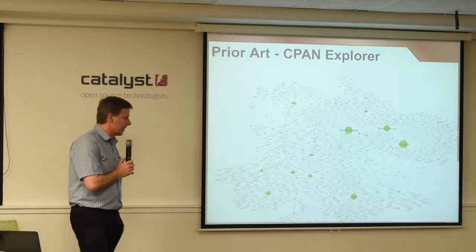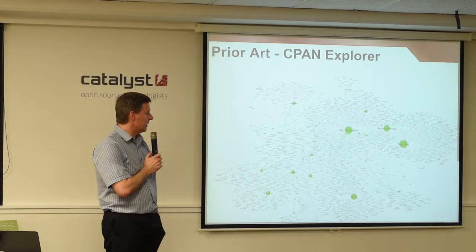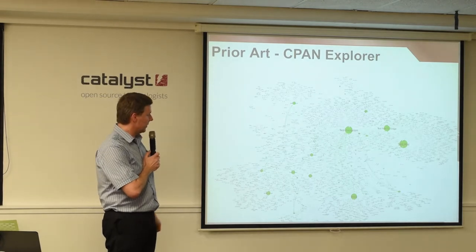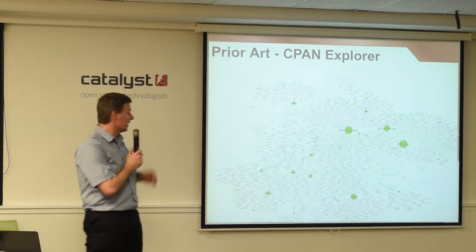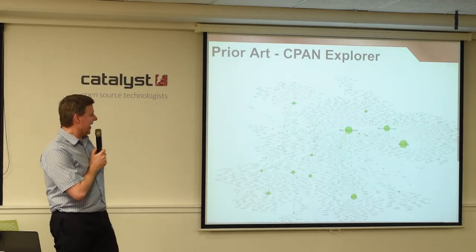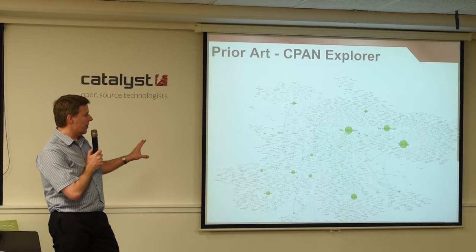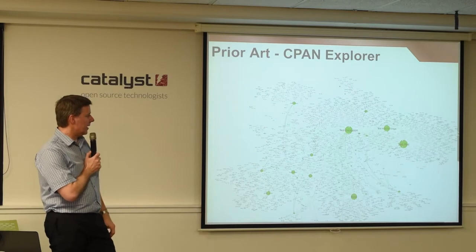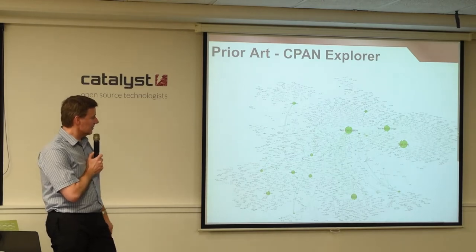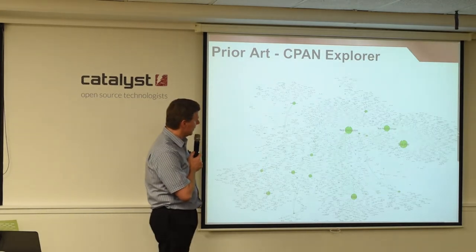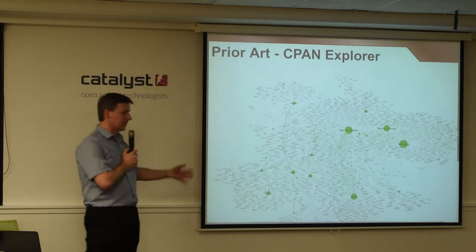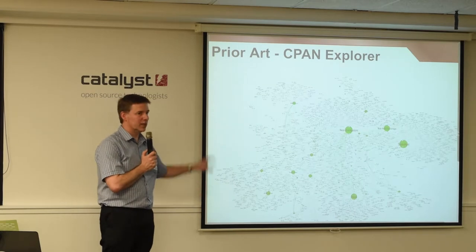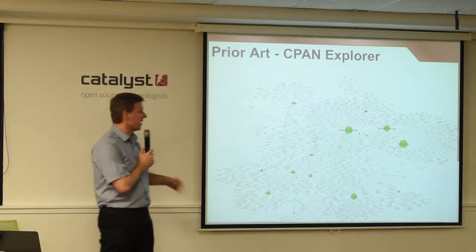I wasn't the first person to think of mapping CPAN, and not even the first person to actually do it. Someone created this thing showing the relationships — the dependencies between different modules. It allows you to scroll around, zoom in, and explore it, but ultimately when you zoom in, you just see bigger dots. You can read the text, but there's nothing else there.